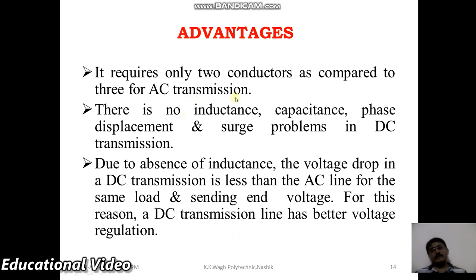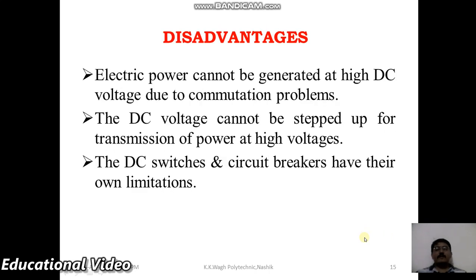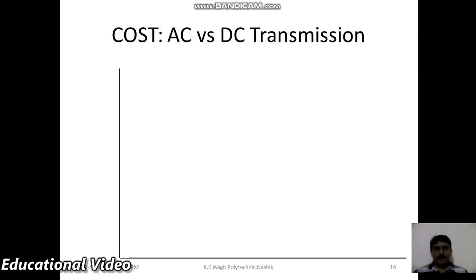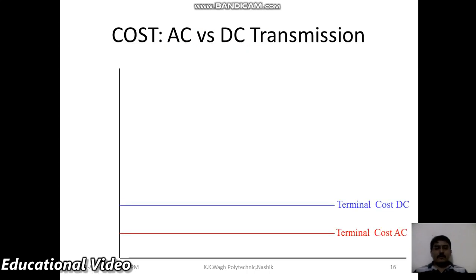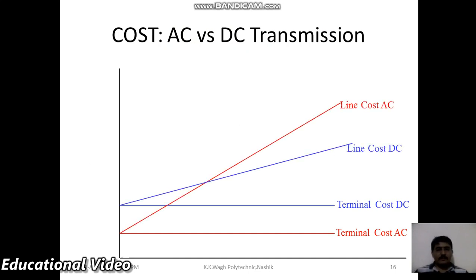Advantages of HVDC: it requires only two conductors compared to three for AC transmission. There is no inductance, capacitance, phase displacement, or surge problems for DC transmission, and due to this the DC transmission line has better voltage regulation. Disadvantages: electric power cannot be generated at high DC voltage, commutation problems exist, DC voltage cannot be stepped up easily for high voltage transmission, and DC switches and circuit breakers have their own design limitations.